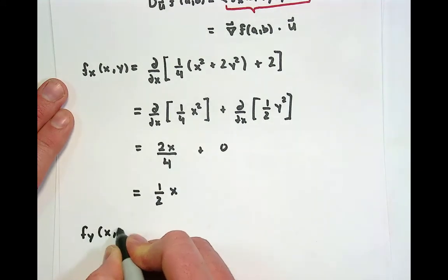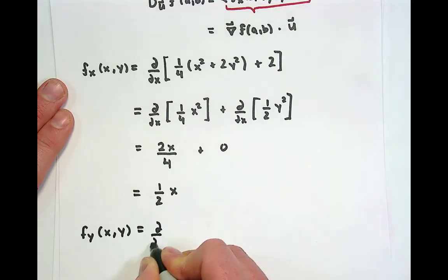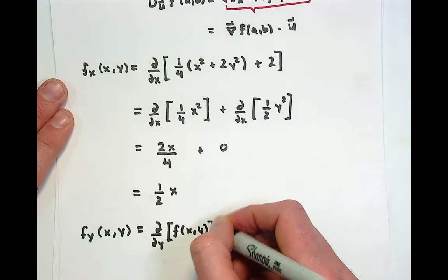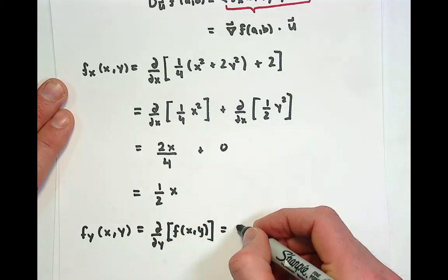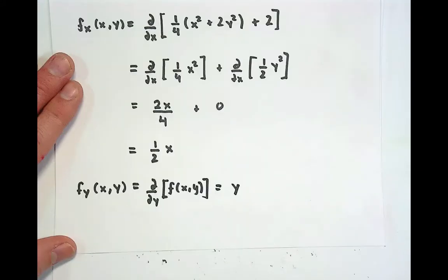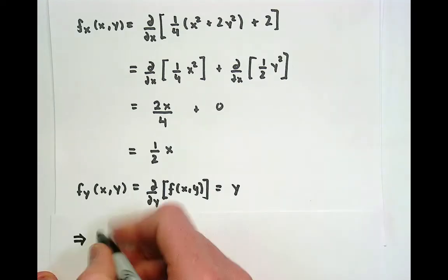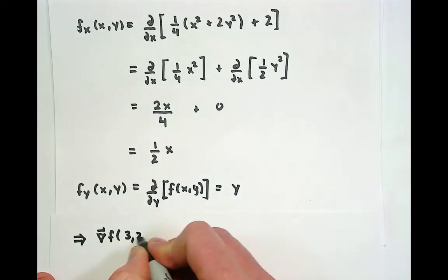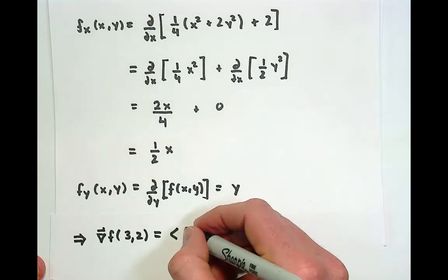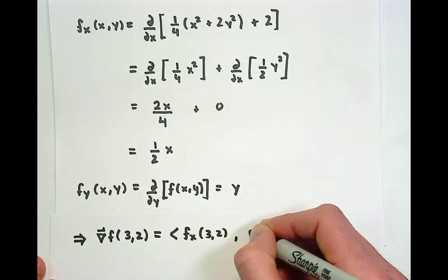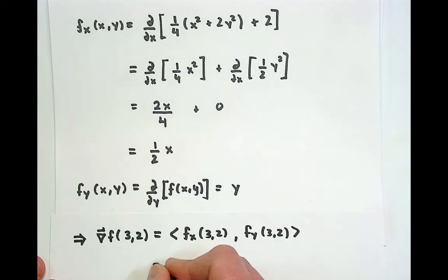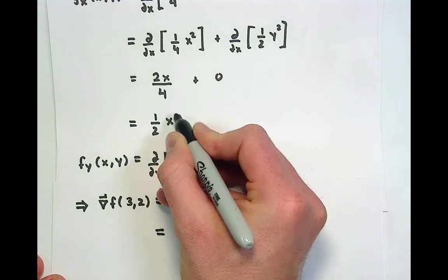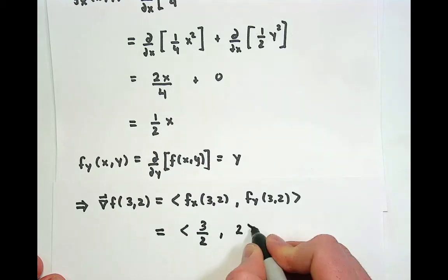We'll do the same process for ∂f/∂y — I'll let the viewer confirm this. Taking that derivative, it comes out to y. So the gradient of f evaluated at the input point (3, 2) is the vector (f_x at (3,2), f_y at (3,2)). This gives us (3/2, 2), since the partial derivative with respect to x evaluated at x=3 is 3/2, and the partial with respect to y evaluated at y=2 is just 2. That's the gradient.